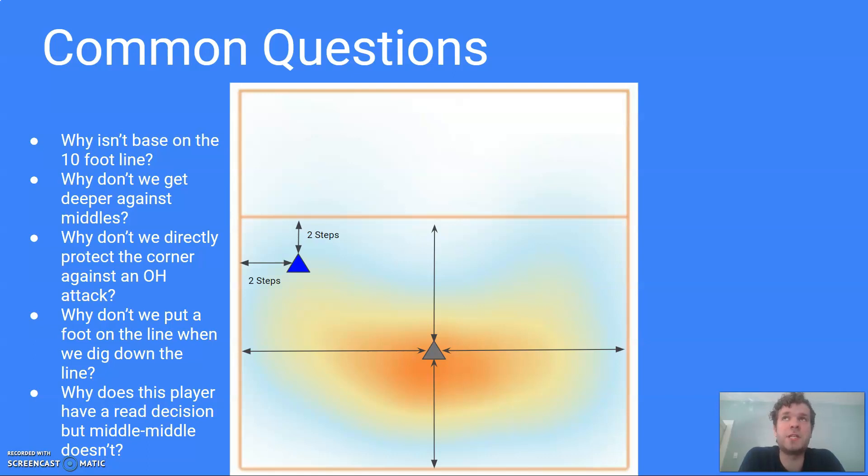So if we start there in base, we pretty much guarantee that we're going to have to move. And if you start on the 10-foot line in base and then realize you need to dig down the line, you have to get so far back to have a chance of digging the ball. It'd be much better to start a little further back and instead work on reading the setter so we can read a setter dump and go play it rather than relying on being close and then giving up a lot of deep attacks.